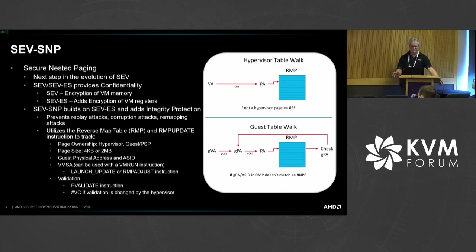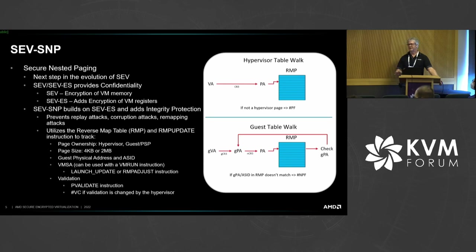Also things like validation — the guest has to validate all the memory that it's going to use privately. And we will get a #VC in the guest if the hypervisor tries to change things out from underneath us when we think we should have access to a private page that we've already validated but the hypervisor has decided to try and mess with the guest.